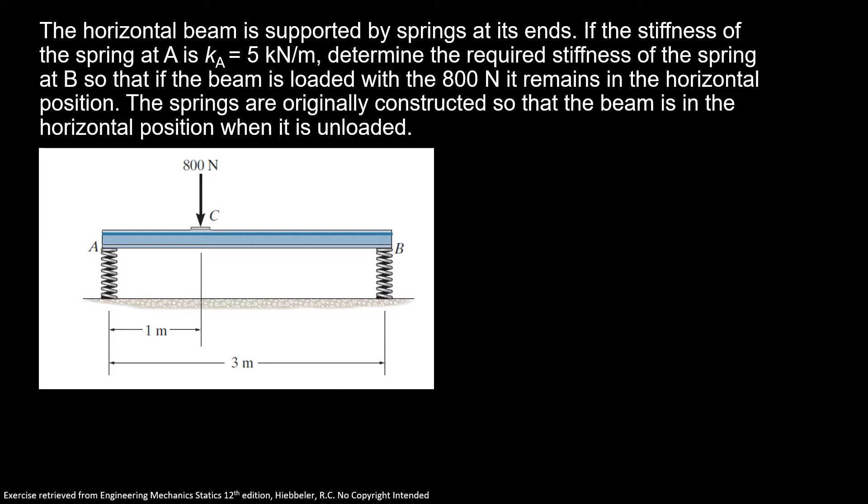So that if the beam is loaded with 800 N, it remains in the horizontal position. The springs are originally constructed so that the beam is in the horizontal position when it's unloaded.